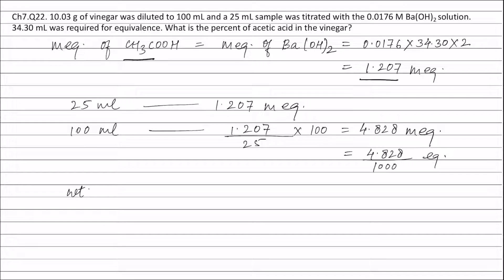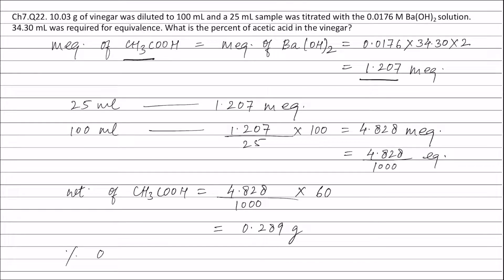Therefore weight of acetic acid is equal to 4.828 milliequivalents of acetic acid multiplied by equivalent weight 60, and this is equal to 0.289 grams. Therefore percentage of acetic acid is equal to weight of acetic acid, that is 0.289 grams, divided by weight of vinegar, that is 10.03 grams, into 100, and this is equal to 2.9 percent.